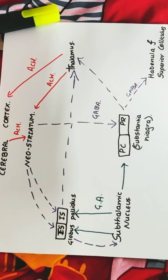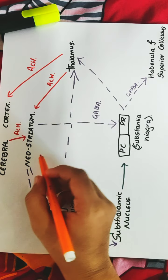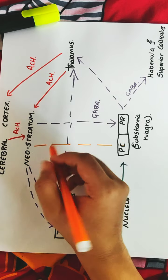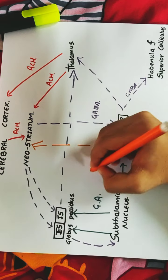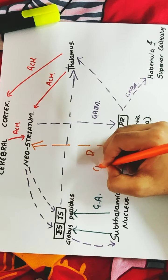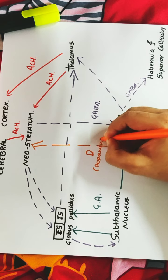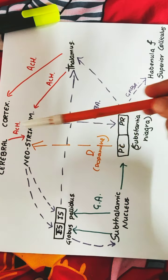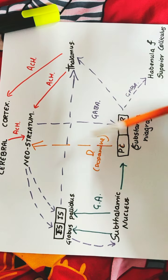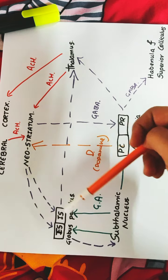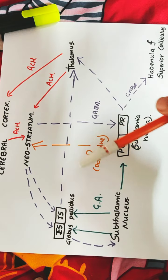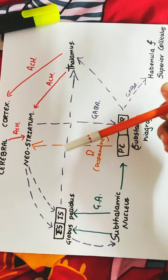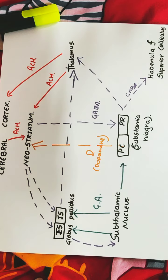The fourth neurotransmitter is dopamine, which is inhibitory and travels from the pars compacta to the neostriatum — this is the nigrostriatal pathway. If there is a decrease in dopamine concentration in this pathway, Parkinson's disease will occur. This completes the overview of the basal ganglia connections and feedback circuit.